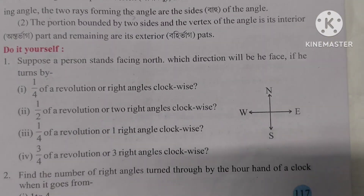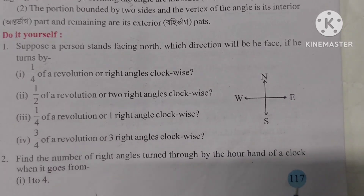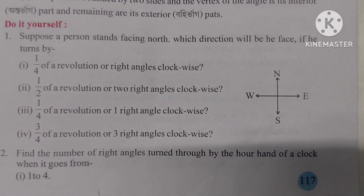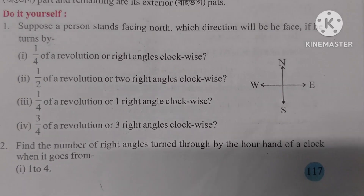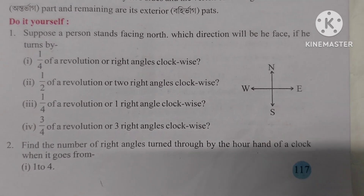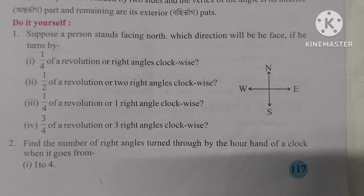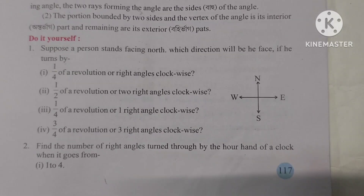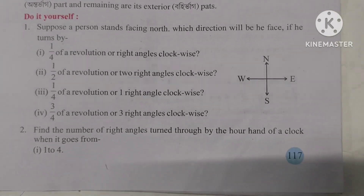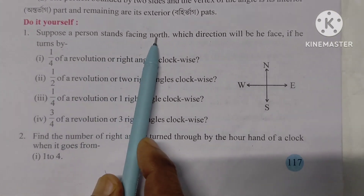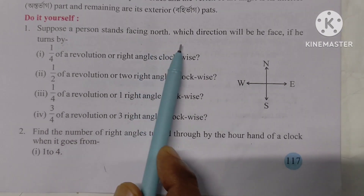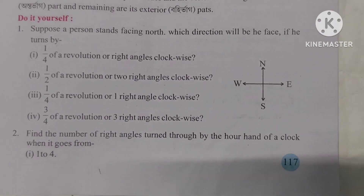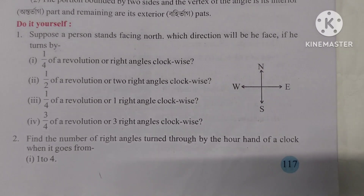Now, page 117, do it yourself. Suppose a person stands facing north. Which direction will he face if he turns by one-quarter of a revolution or one right angle clockwise?